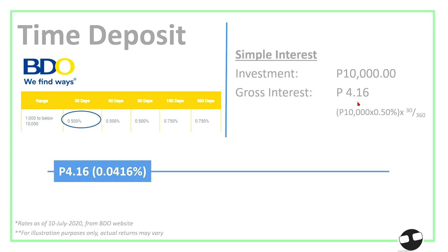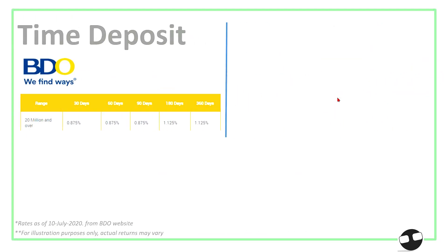This is exactly the gross interest before taxes and any fees. Now let's say the investment is larger — 20 million — and you kept it for one year or 360 days, so you would get a higher return as well: that's 1.125%.